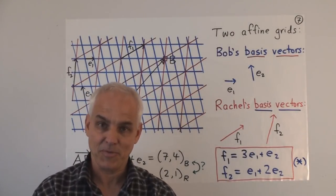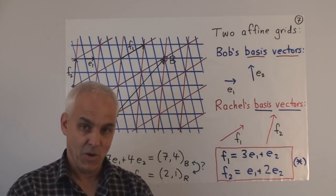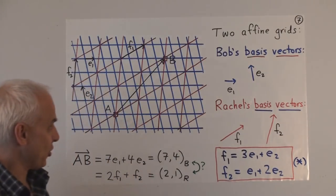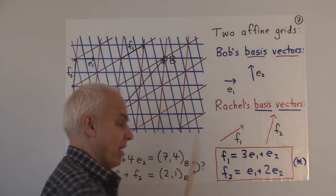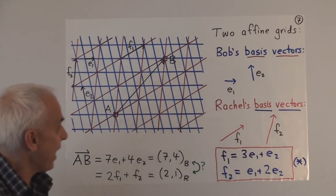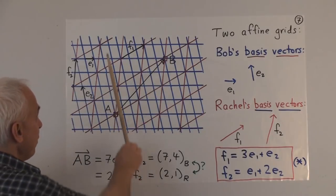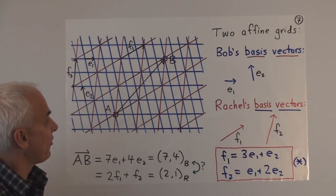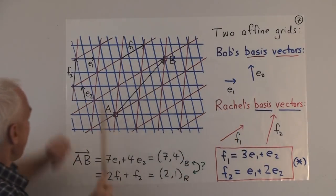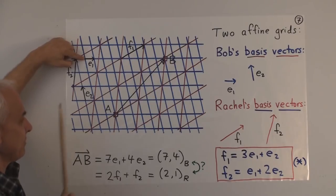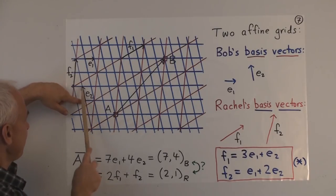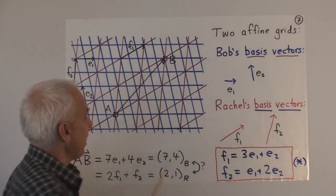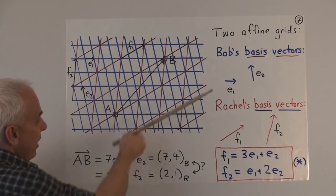Now we move on to something a little bit more complicated: instead of one affine plane, we consider two different affine planes. We're going to imagine that we have two people — one's called Bob, who is blue, and Rachel, who is red. Bob has created an affine grid plane with these blue lines in these directions. The basis vectors for Bob's grid are E1 and E2: E1 in the horizontal direction and E2 roughly in the vertical direction.